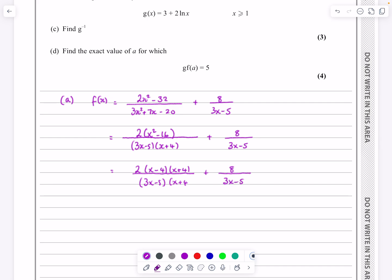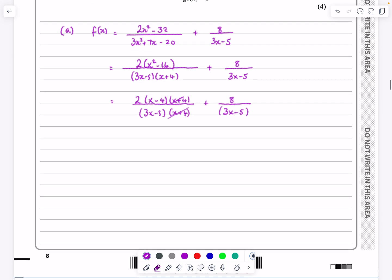And I say, absolutely expecting at this stage then to say, right, okay, well that will cancel with that. So, that leaves me the same denominator for both of these. So, I've got 2x minus 4 over 3x minus 5, plus 8 over 3x minus 5.